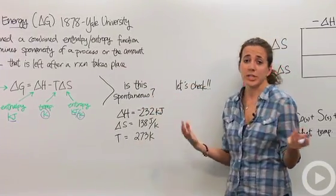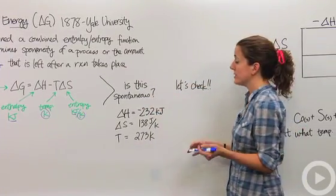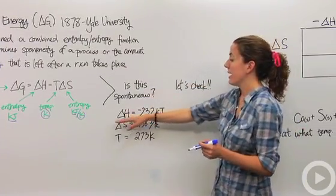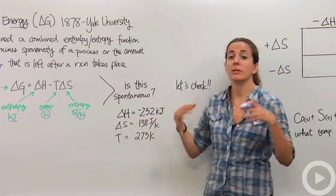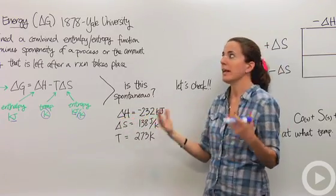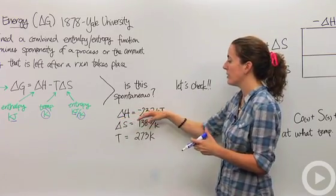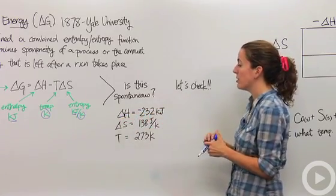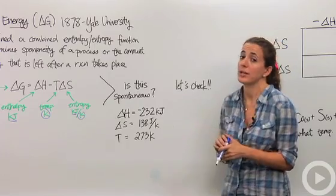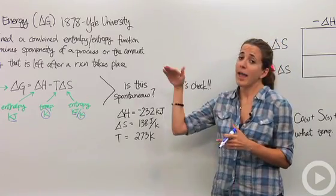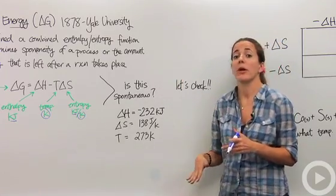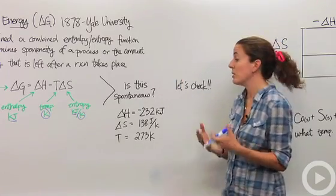For this reaction — it doesn't matter what it is — our delta H is negative, meaning it releases energy. It released 232 kilojoules of energy; we went from a high energy system to a low energy system.